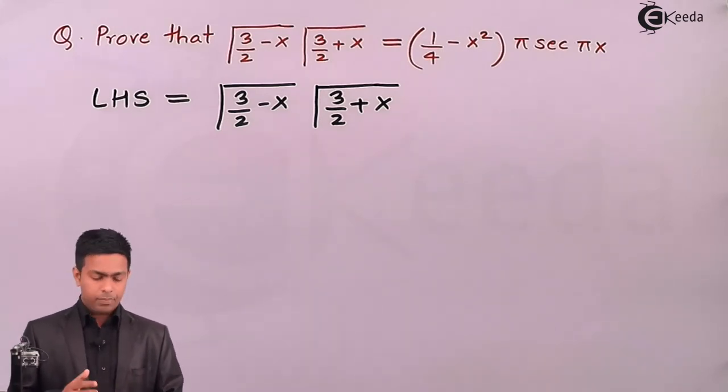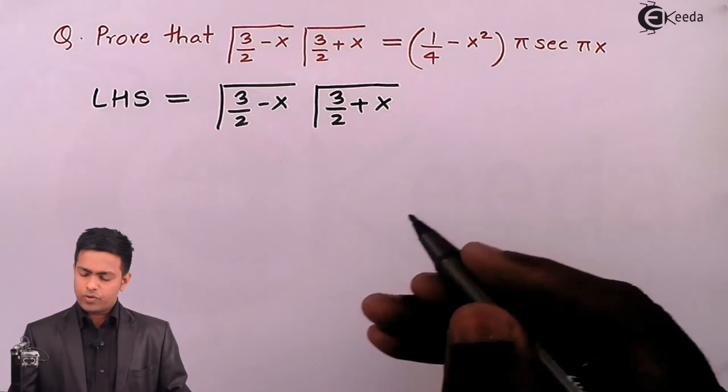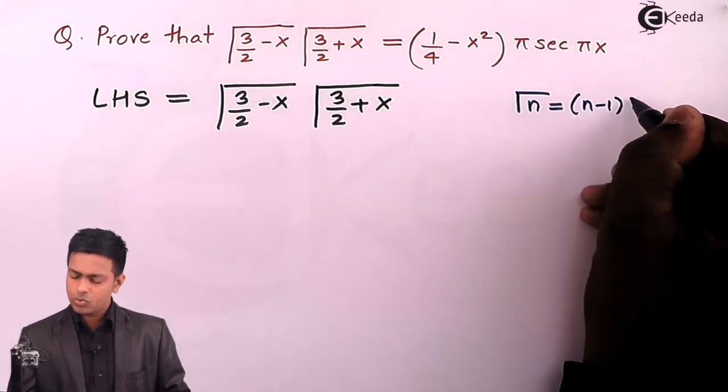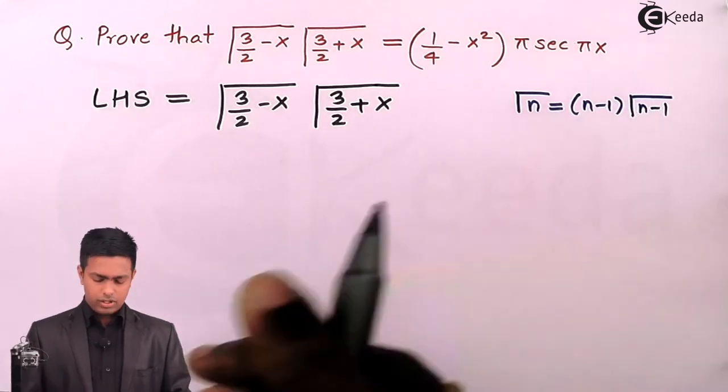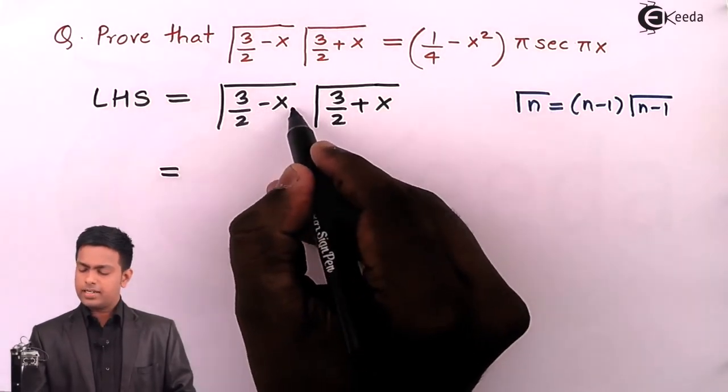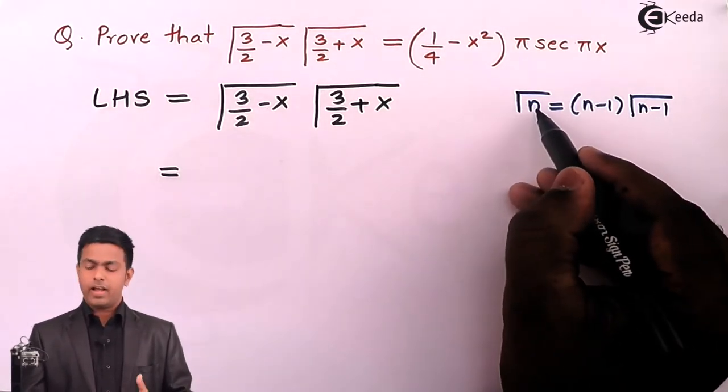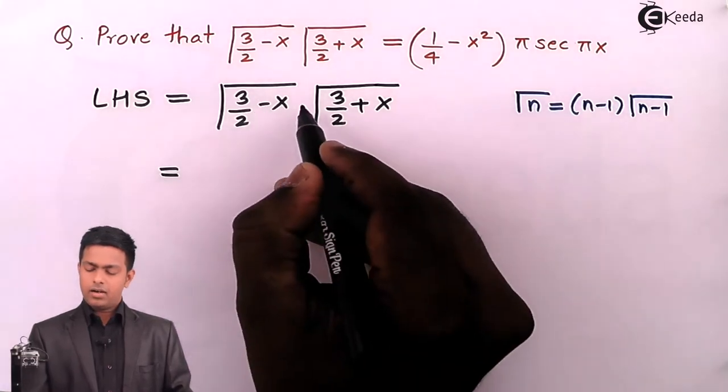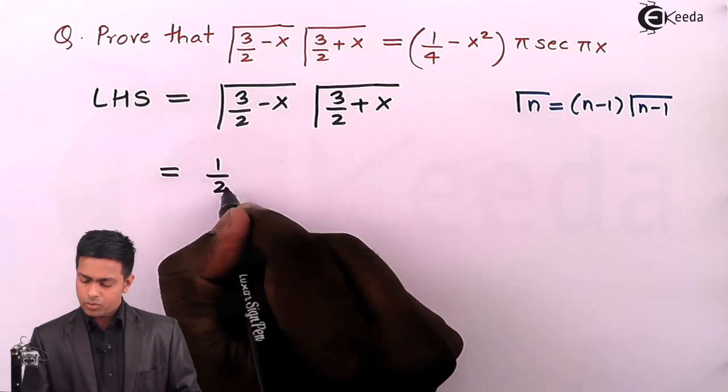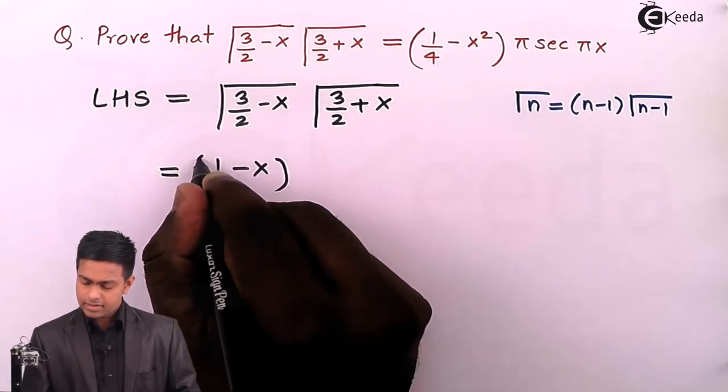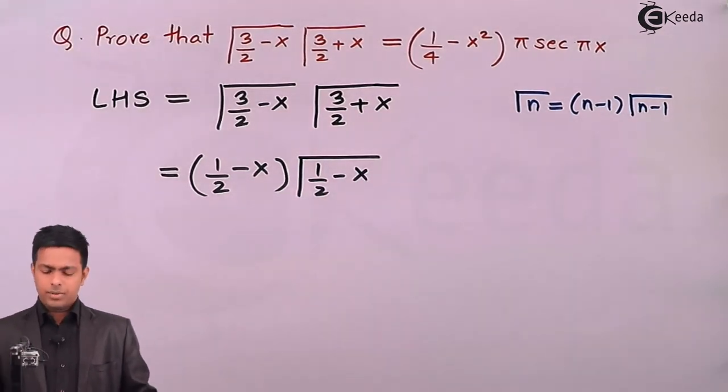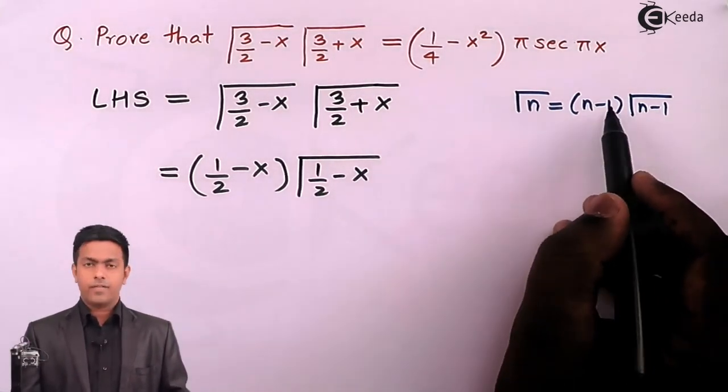We have a property like this: gamma(n) equals (n-1) times gamma(n-1). By applying this property here, we will get (3/2 - x) will behave as n, then we'll do minus 1, so that becomes (1/2 - x) gamma(1/2 - x). Similarly, applying this property for the second term, we will get (1/2 + x) times gamma(1/2 + x).